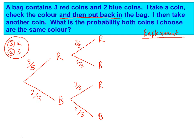What we do now on the end of each branch is write what the outcome could be. The top branch: starting at the beginning, we go along red and then pick another red, so this first one is red, red. The second one: we go along to red and then down to blue, so this would be red, blue. Now the bottom half: we pick a blue first and then a red, so this would be blue, red. And the very bottom one would be picking a blue and then another blue.